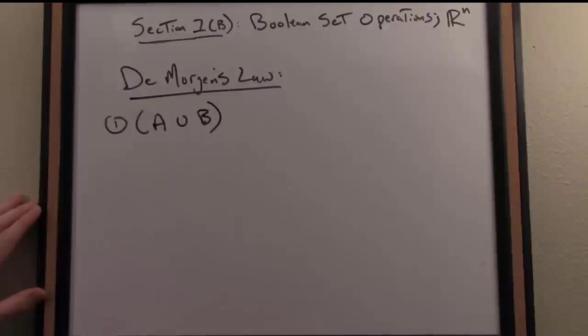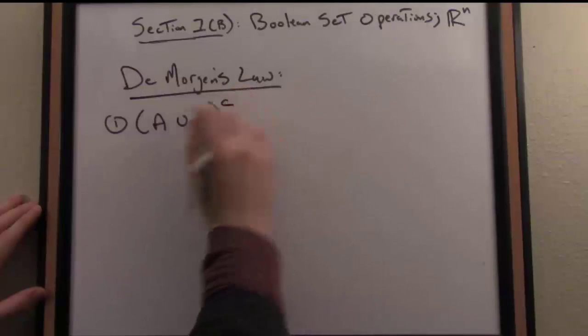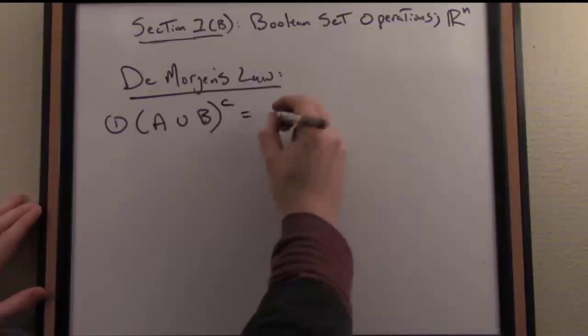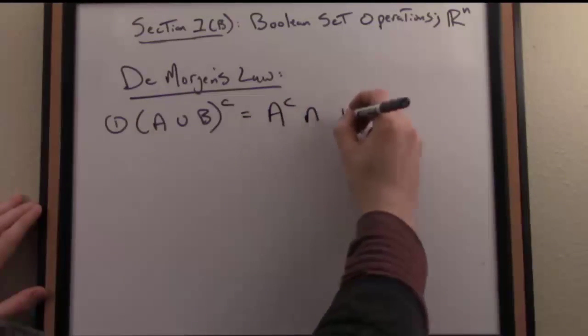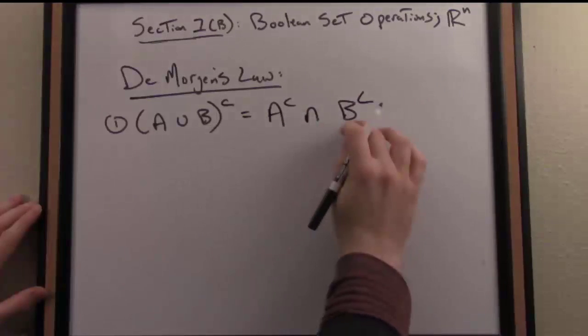So one version of De Morgan's Law reads like this. If we take the complement of A union B, that's equal to or equivalent to as a set, the intersection of A complement and B complement.